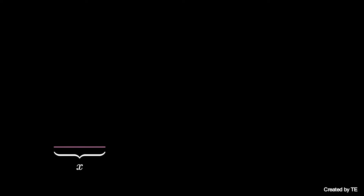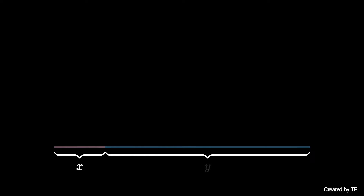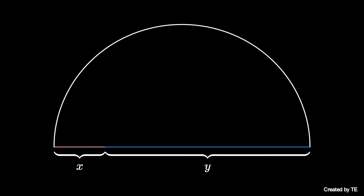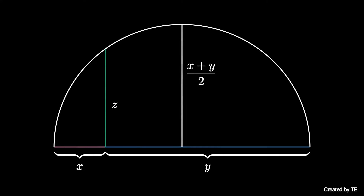Imagine two positive real numbers x and y represented by lengths of connected line segments, and then draw the semicircle with diameter given by the connected segments, so that the radius of the semicircle is (x plus y) over 2. Then let z be the length of the half chord from the point where x and y meet to the semicircle.